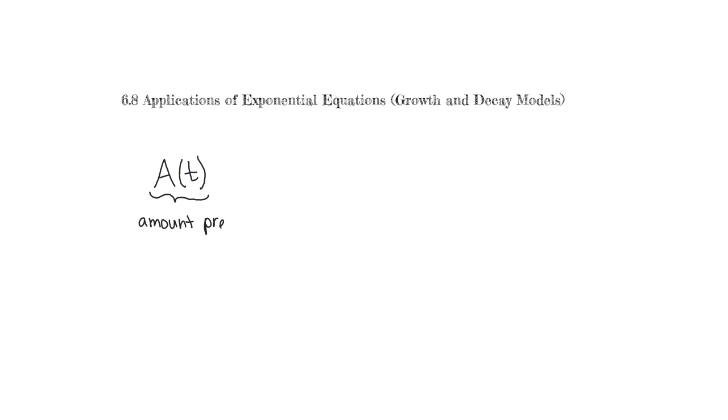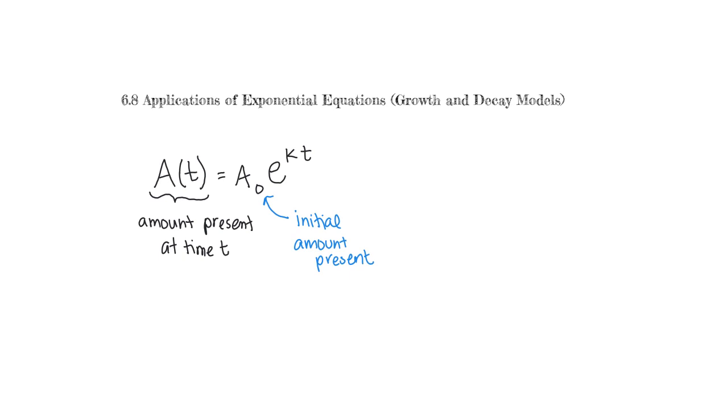The first thing you have to know in order to do a growth or decay model is the basic function. Our function is called A — it is a function of the variable T, which represents time. The reason they use A is because it represents an amount of whatever substance, thing, or person is present at time T. A naught represents the initial amount present, so when time is zero, the initial amount present is whatever number is in the front of the function.